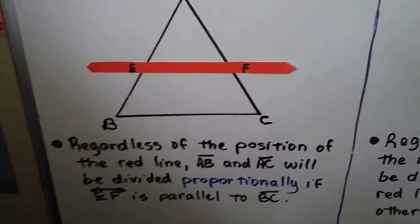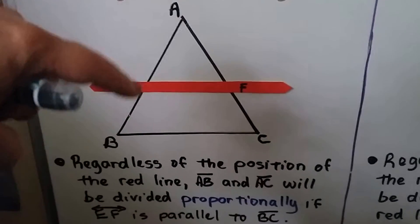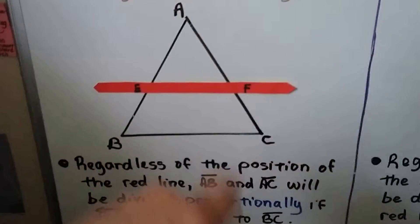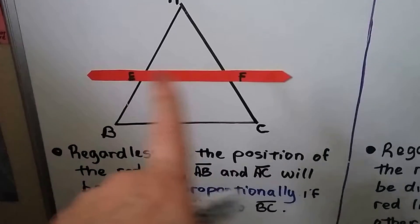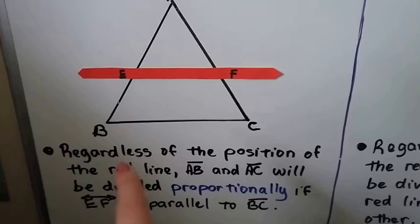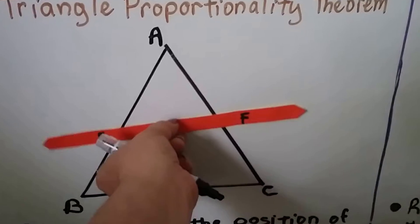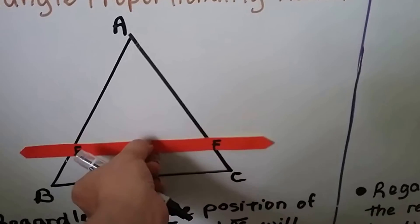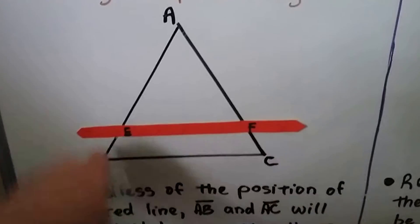And regardless of the position of the red line, AB from here to here, this whole side, and AC from here to here, this whole side, will be divided proportionally if this line EF is parallel to BC. So it doesn't matter where we move this. We can move it up or down. It's going to divide it proportionally if it's parallel to BC.